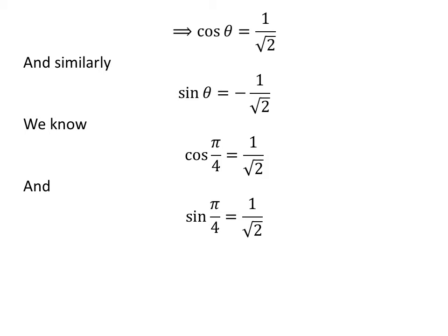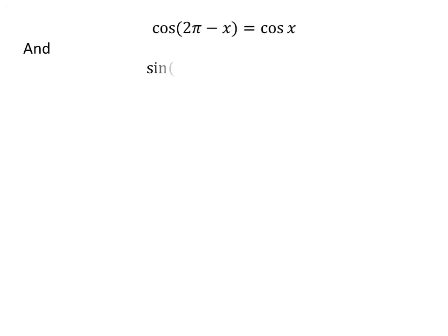As the value of cosine of theta is positive and the value of sine of theta is negative, theta lies in the fourth quadrant. We know cosine of pi upon 4 is 1 upon square root of 2, and sine of pi upon 4 is 1 upon square root of 2. We also know cosine of 2 times pi minus x is equal to cosine of x, and sine of 2 times pi minus x is equal to minus sine of x.